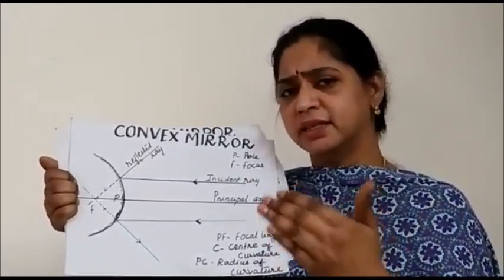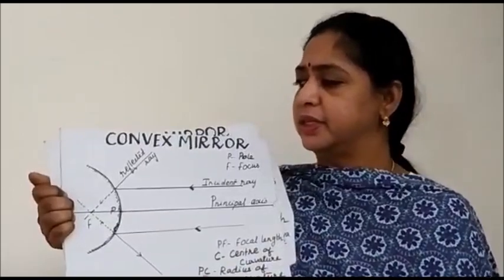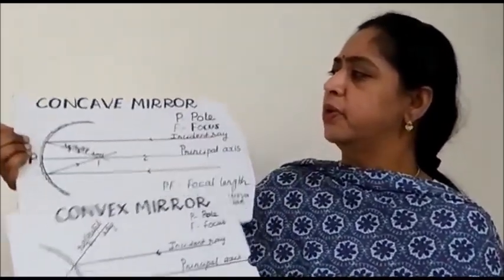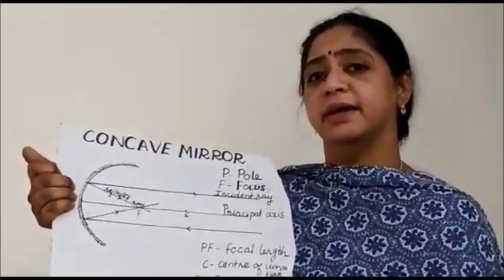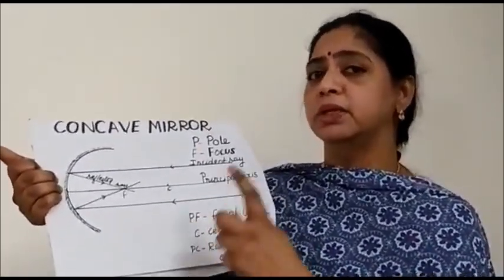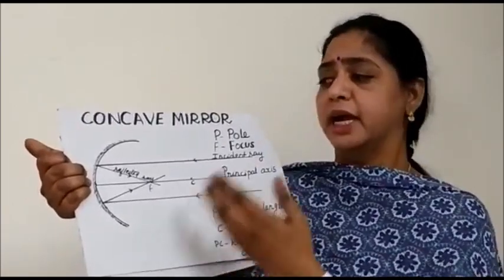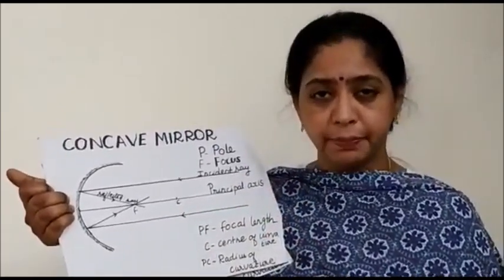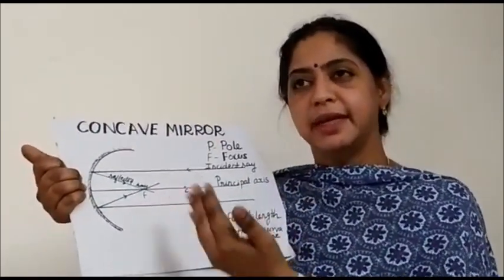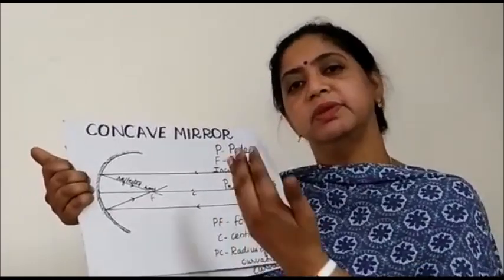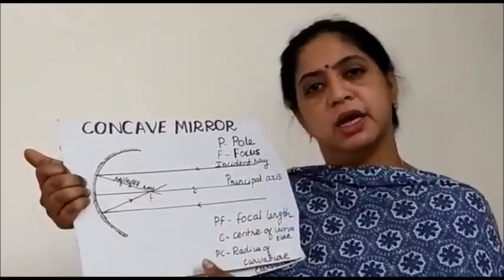An image that can be obtained on a screen is called a real image. For a concave mirror, we can get both real and virtual images depending on the position of the object. The nature and position of the image we will discuss in the upcoming videos.